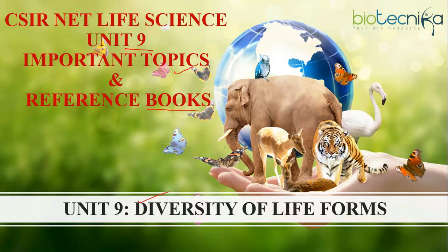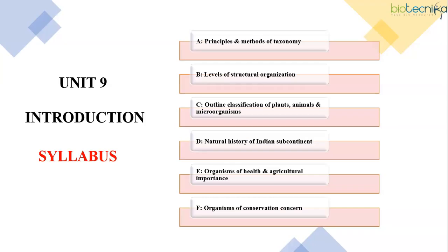Unit 9 is about Diversity of Life Forms. This unit mainly focuses on taxonomic units and classification of plants, animals and microorganisms — the diverse forms of life. It comprises 6 subunits which mainly consist of theoretical concepts. This unit is important as it carries an average weightage of 20 marks in the exam, and questions requiring knowledge of mixed facts from this unit and ecology or evolution may also be expected.